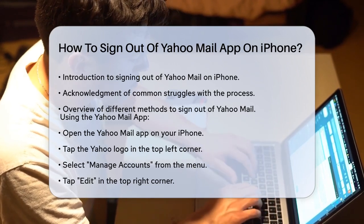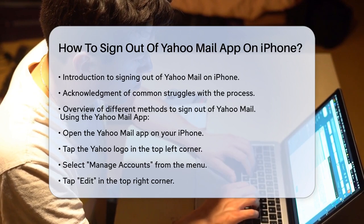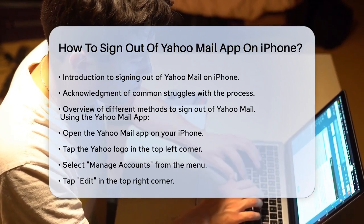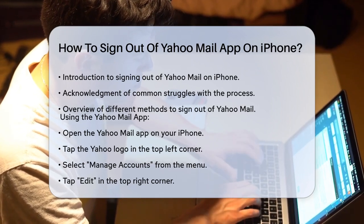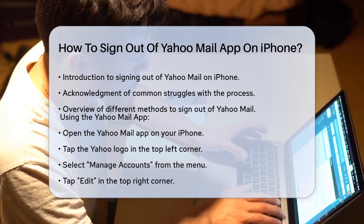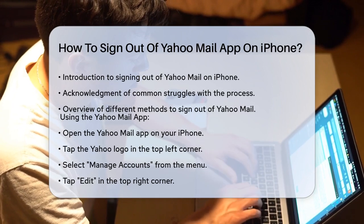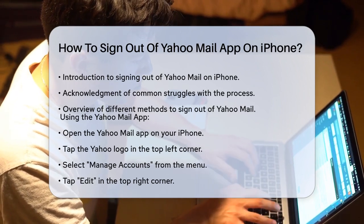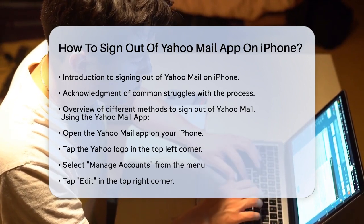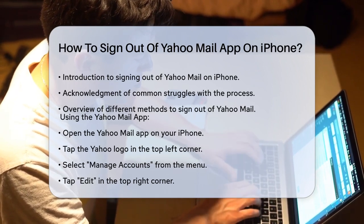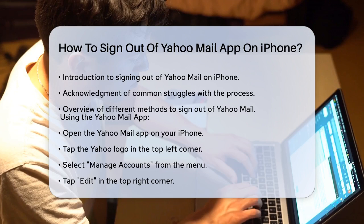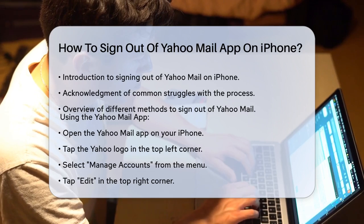Using the Yahoo Mail app: to sign out directly from the Yahoo Mail app, follow these steps. Open the Yahoo Mail app on your iPhone and tap the Yahoo logo in the top left corner. Select Manage Accounts from the menu.